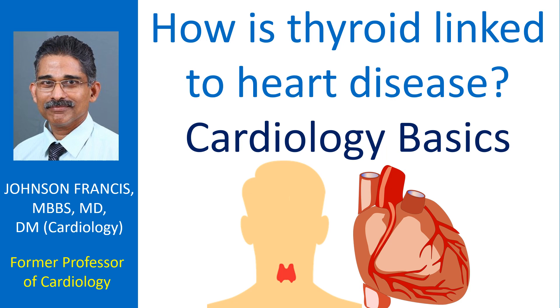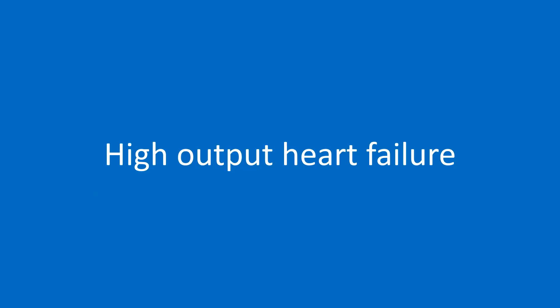In hyperthyroidism, heart rate increases and there is a hyperdynamic circulatory state which can lead to high output cardiac failure. Unlike in the usual congestive heart failure in which the extremities are cold due to vasoconstriction, in heart failure due to hyperthyroidism the extremities are warm. Instead of a low volume pulse in usual heart failure, thyrotoxic heart failure has a high volume pulse.